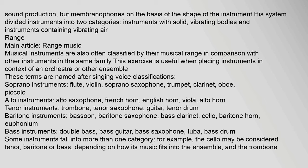Musical instruments are also often classified by their musical range in comparison with other instruments in the same family. This exercise is useful when placing instruments in context of an orchestra or other ensemble. These terms are named after singing voice classifications: soprano instruments include the flute, violin, soprano saxophone, trumpet, clarinet, oboe, and piccolo; alto instruments include the alto saxophone, French horn, English horn, viola, and alto horn; tenor instruments include the trombone, tenor saxophone, guitar, and tenor drum; baritone instruments include the bassoon, baritone saxophone, bass clarinet, cello, baritone horn, and euphonium; bass instruments include the double bass, bass guitar, bass saxophone, tuba, and bass drum.